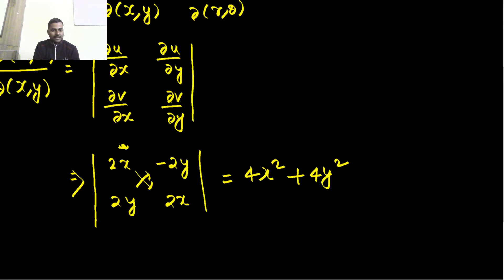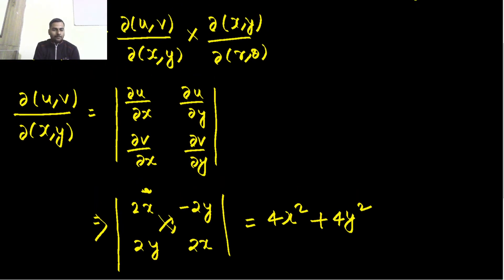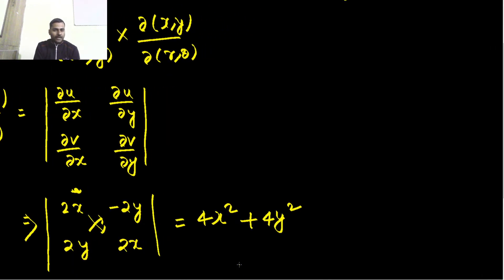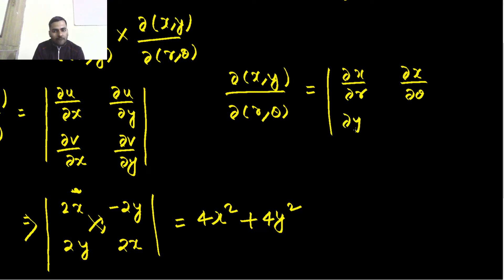Similarly, we will calculate the Jacobian of x, y with respect to r and theta. That will be the determinant of: partial derivative of x with respect to r, partial derivative of x with respect to theta, partial derivative of y with respect to r, and partial derivative of y with respect to theta.